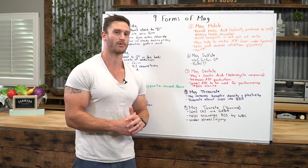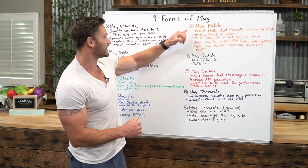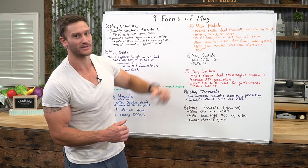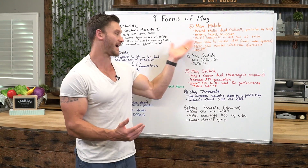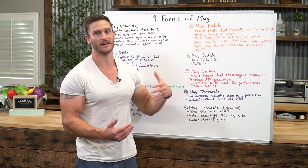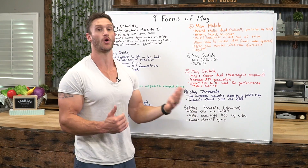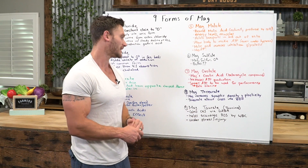Mag orotate is definitely a performance-based one, so a lot of times you'll see these used hand in hand. People will take mag malate and mag orotate together because they work together: mag malate for recovery and cramping, mag orotate for a little extra boost of performance — all working along that ATP pathway.